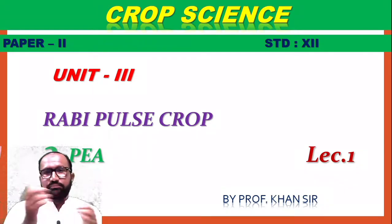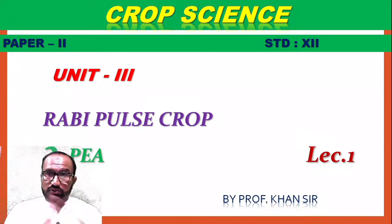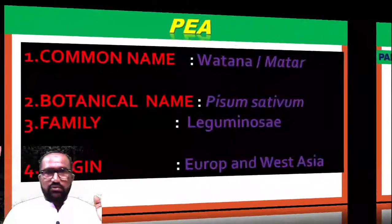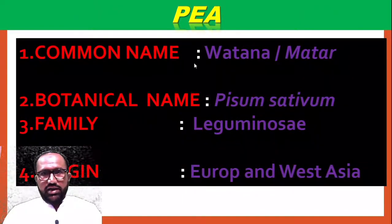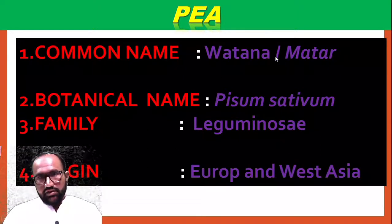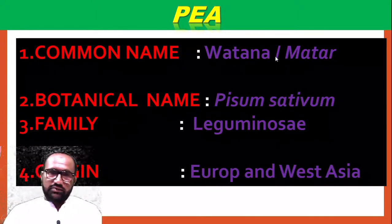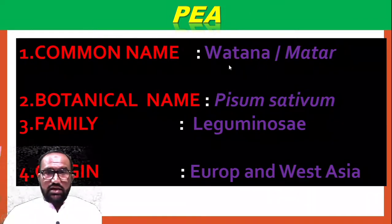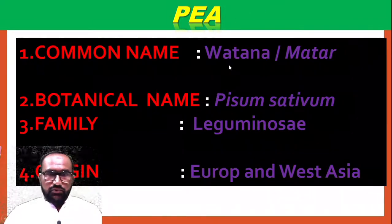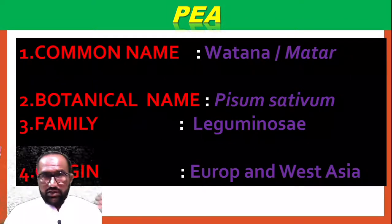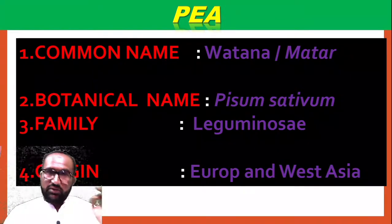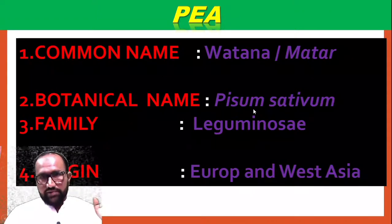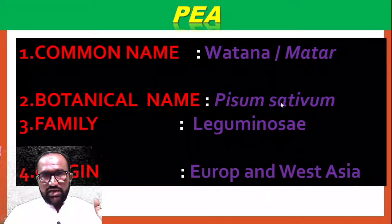The second crop in Rabbi Pulse Crop is the Pea crop. The common name is Watana or Mater. In the market, watana shengai (pea pods) are commonly sold and eaten. The botanical name is Pisum sativum.